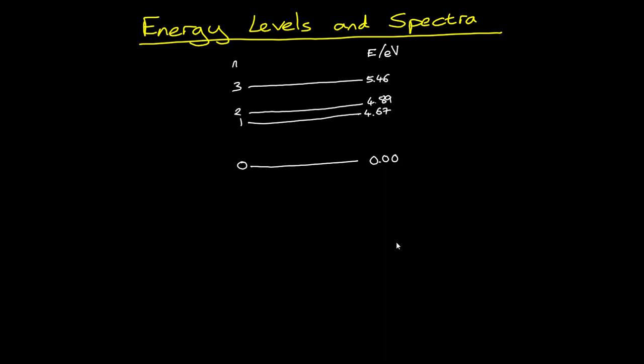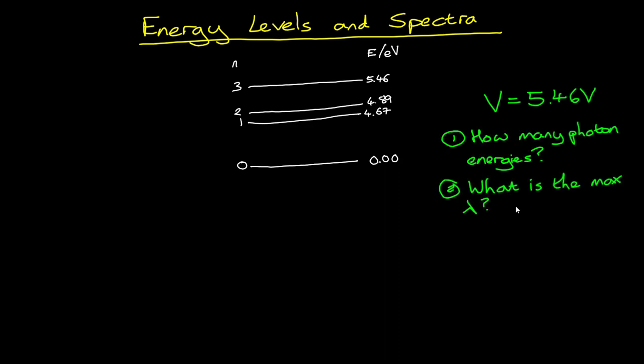Let's end with an example. An electric current is passed through mercury vapour. Mercury atoms have several possible energy levels. The first three are at 4.67 electron volts, 4.89 electron volts, and 5.46 electron volts, relative to the ground state, which we're saying is zero here. If a potential difference of 5.46 volts is applied across the tube, how many different photon energies may be emitted? And two, what is the maximum wavelength of photon that can be emitted?